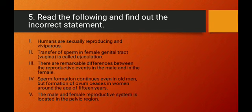Statement 5 — the male and female reproductive systems are located in the pelvic region — is correct, though in males the testes are extra-abdominal. So statements 2 and 4 are incorrect. Option C (two and four) is the right answer to question number five.